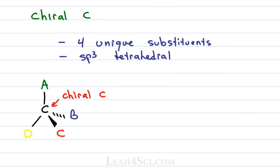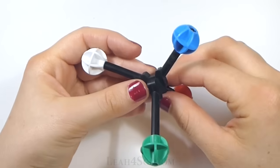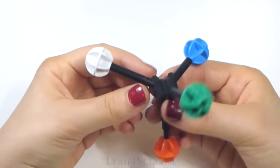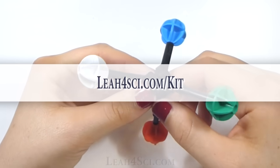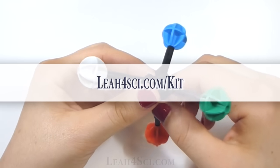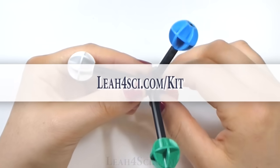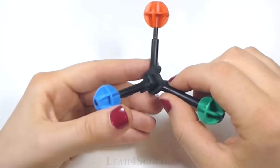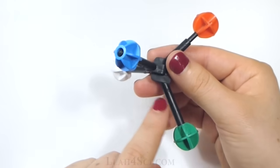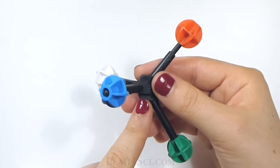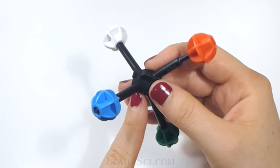This central or chiral carbon is referred to as the stereo center or the asymmetric carbon or asymmetric center. In organic chemistry, it helps to look and hold a 3D structure. If you don't have a kit yet, get one on Amazon by going through leah4sci.com/kit and if you purchase through my link, I do get a small commission. So notice here we have a central carbon atom with four unique substituents. This is considered the chiral or asymmetric center and it's tetrahedral because it's sp3 hybridized.